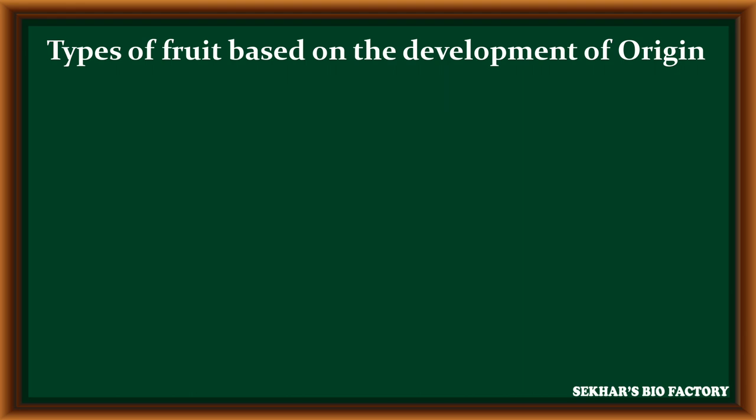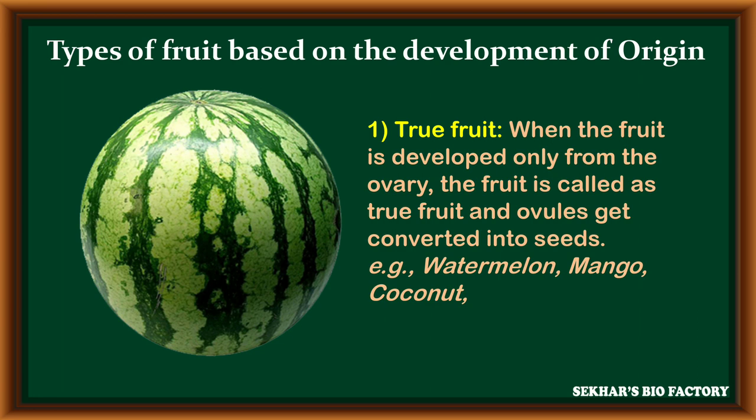Types of fruits based on development and origin. The first type is true fruits. When, after fertilization, the development of fruit takes place from the ovary, such fruits are called true fruits. These true fruits have seeds developed from ovules after fertilization. Examples: most fruits like watermelon, mango, coconut, etc.